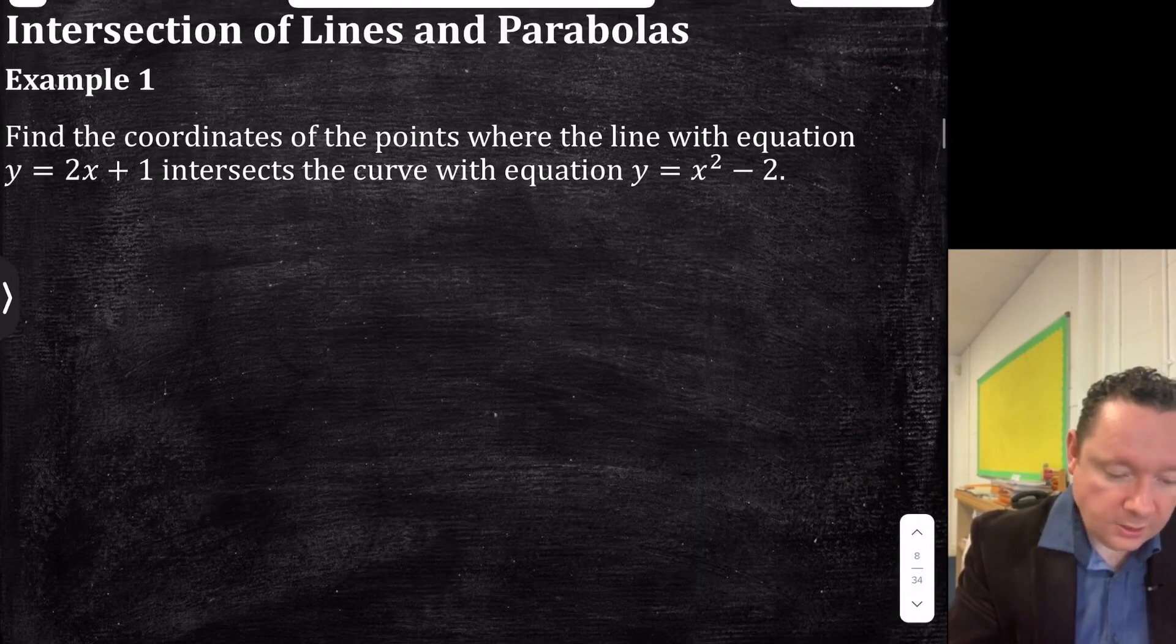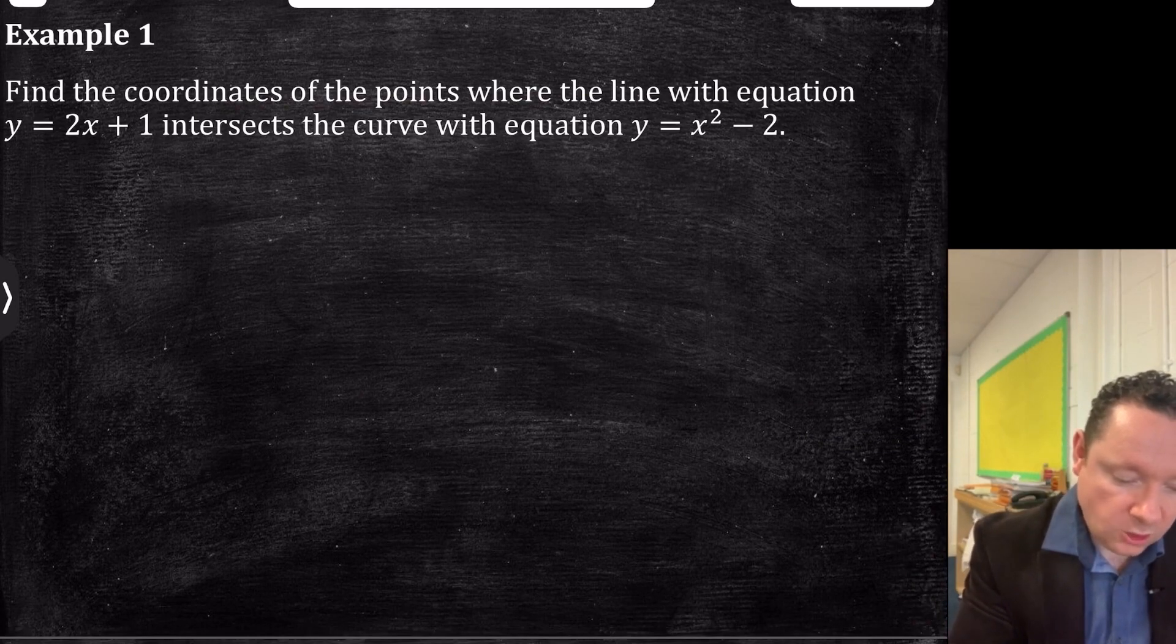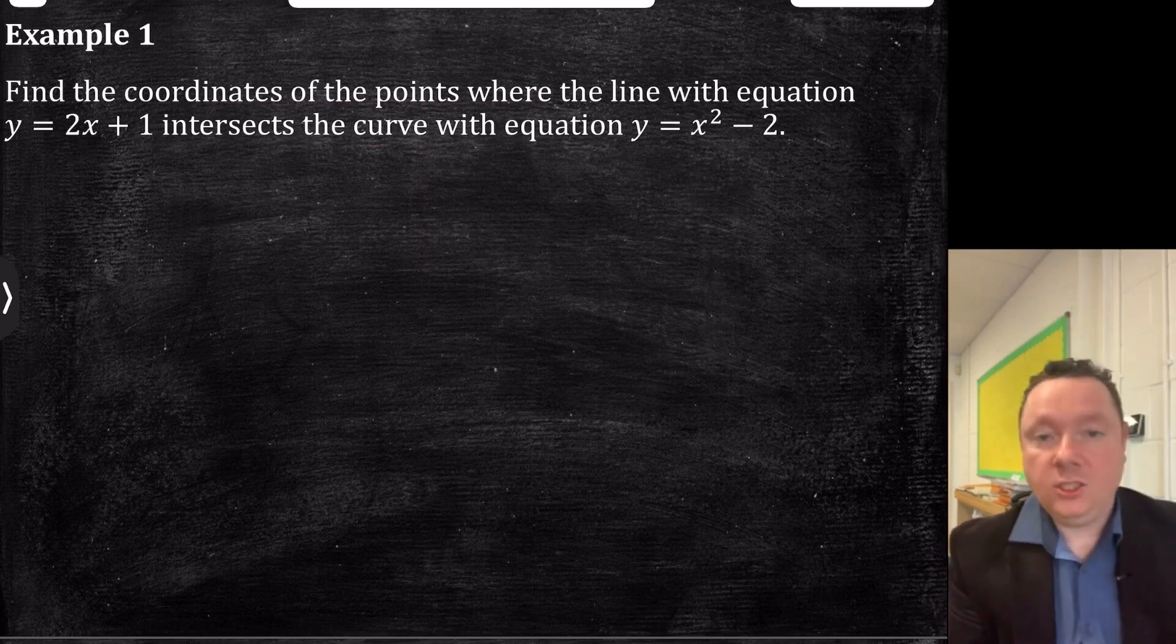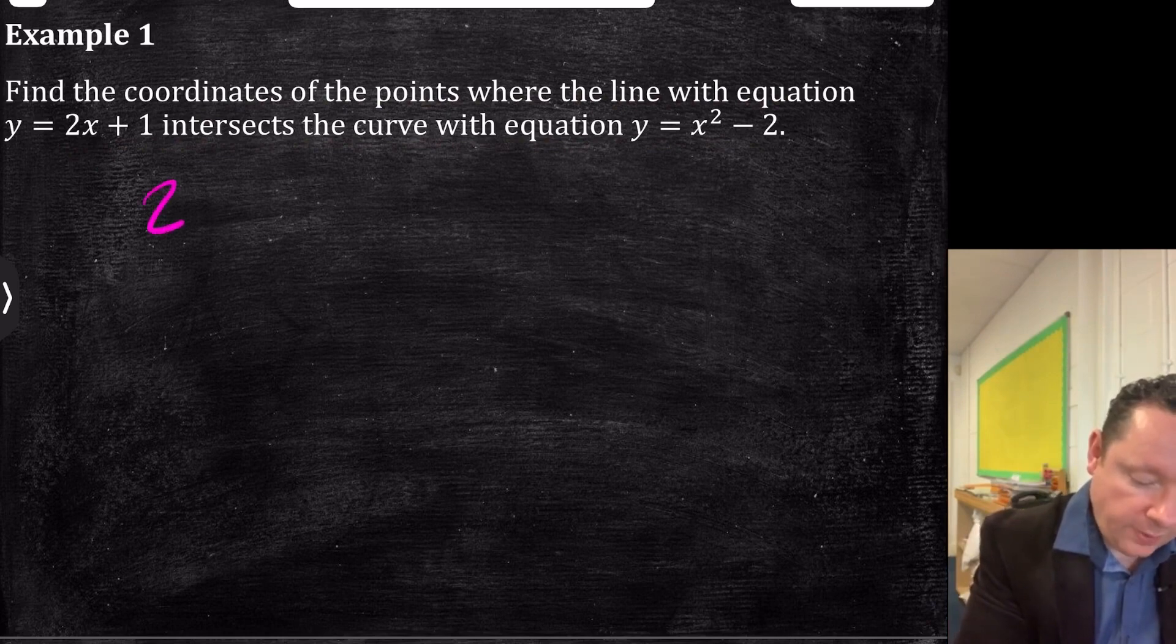Example 1, intersection of lines and parabolas, says find the coordinates of the points where the line with equation y = 2x + 1 intersects the curve with equation y = x² - 2. We've got two lines with a y and a y, so we can just set them equal to each other. 2x + 1 = x² - 2, and solve that quadratic.